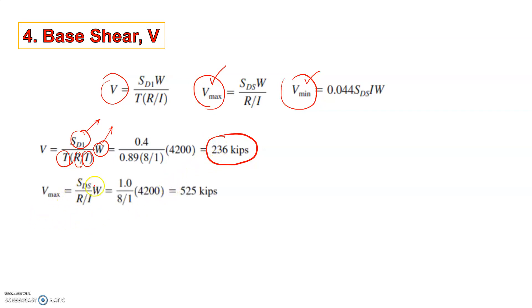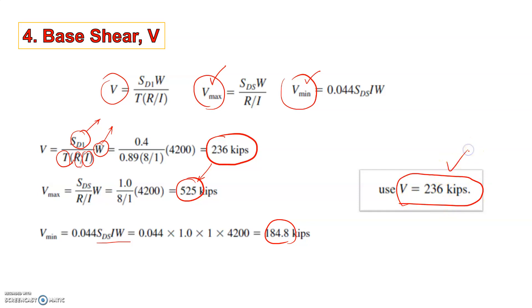Vmax is similarly calculated and we get a value of 525 which is higher than V and the Vmin can be calculated in this equation. And the value is 184. This shows that the value of V that we need to use for the problem is 236 kips.